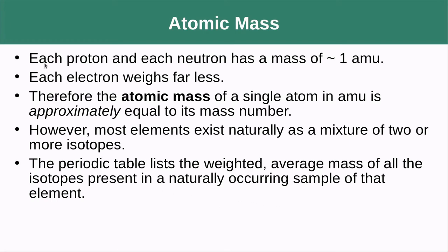Now we talk about atomic mass. Each proton and each neutron has a mass of approximately 1 AMU, and each electron weighs far less, so the atomic mass of a single atom in AMU is approximately equal to its mass number, but not exactly. Because most elements exist naturally as a mixture of two or more isotopes, the periodic table lists a weighted average of all naturally occurring isotopes — that's where those longer decimal mass values on the periodic table come from.